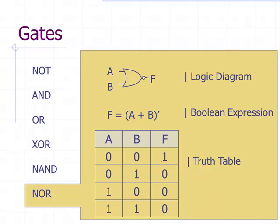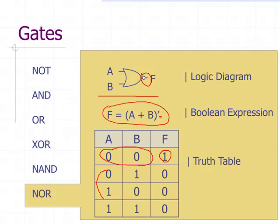The last gate is the NOR gate. It looks just like an OR gate with the NOT symbol added. In Boolean algebra it's the same as the OR expression but with a negation symbol. In the truth table: if both inputs are zero, we get a high; if any one of the inputs is one, we get a low. That's the NOR gate — the opposite of the OR gate.